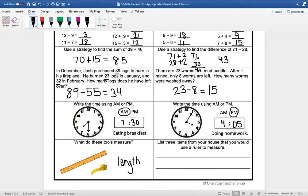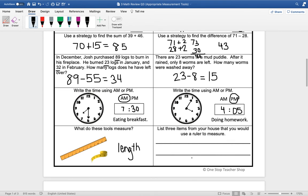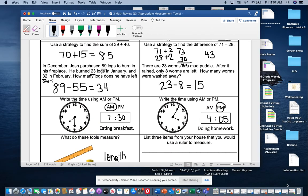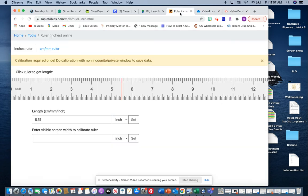Our last question says list three items from your house that you would use a ruler to measure. So a ruler is 12 inches long. I'm going to show you guys what that would look like. This is a ruler that's 12 inches long, so anything the length of a piece of paper or shorter would be something that you could measure with a ruler. You could measure your pencil with a ruler, you could measure some books with a ruler, anything that's the length of a piece of paper or shorter.